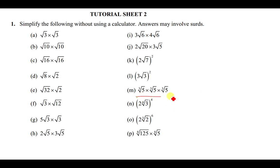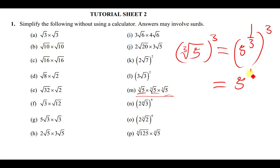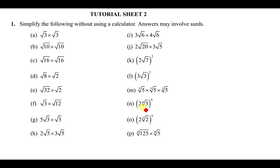For (∛5)³: this means the cube root of 5 taken three times, i.e., (5^(1/3))³ = 5^(1/3 × 3) = 5^1 = 5.